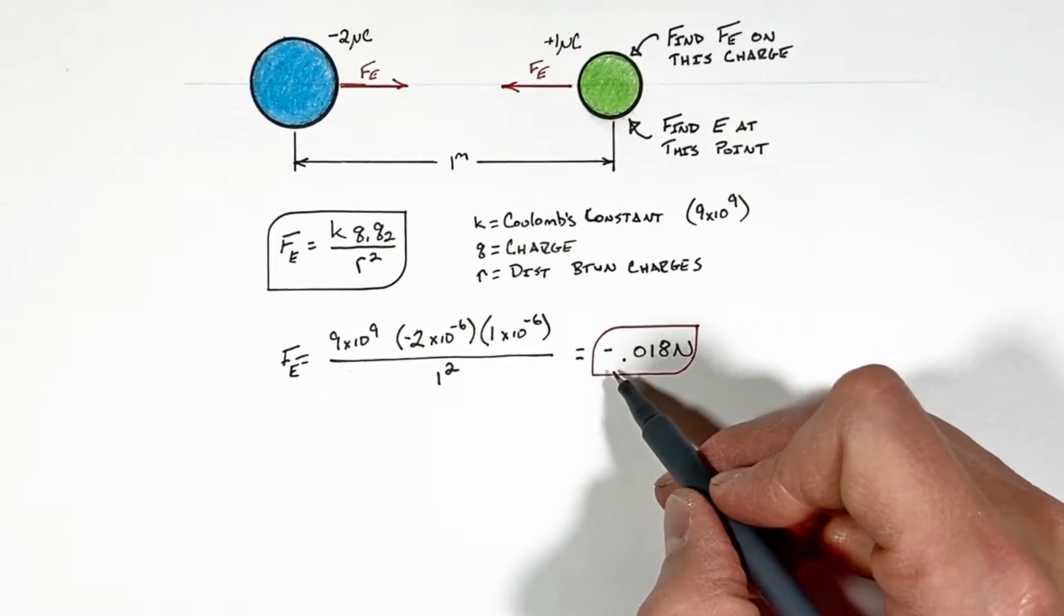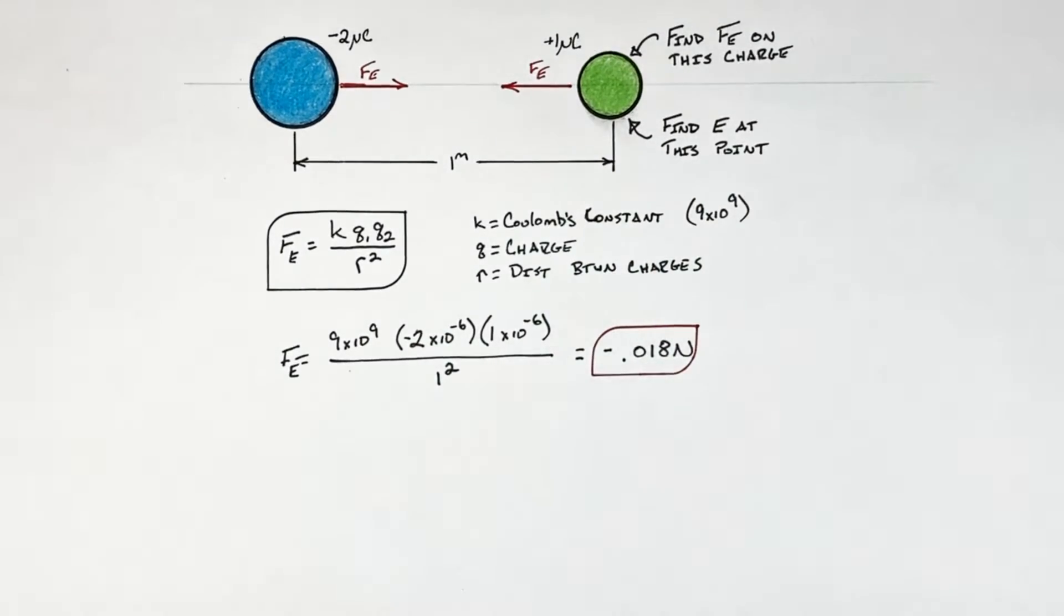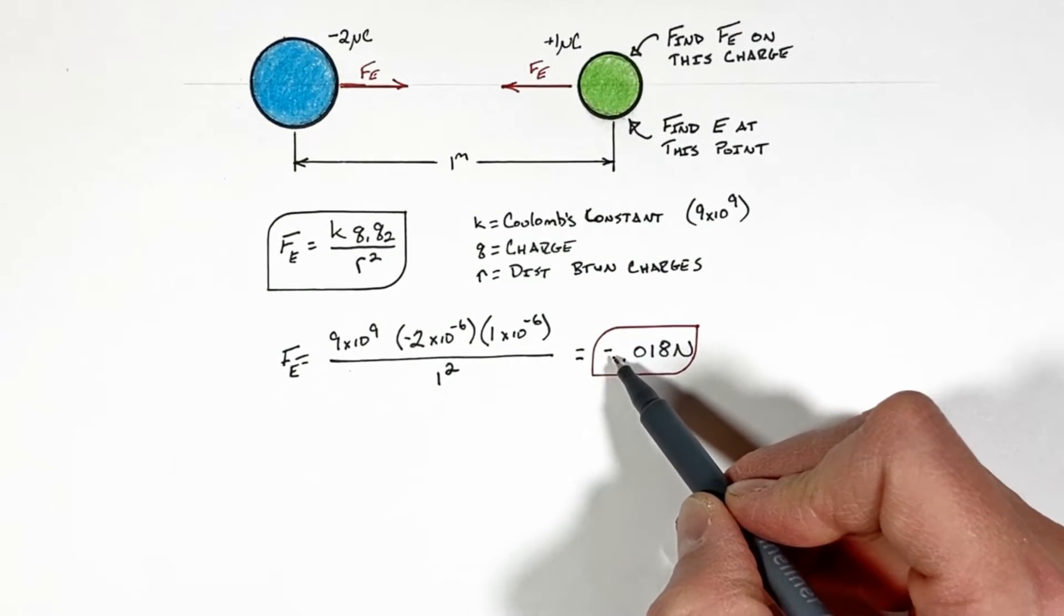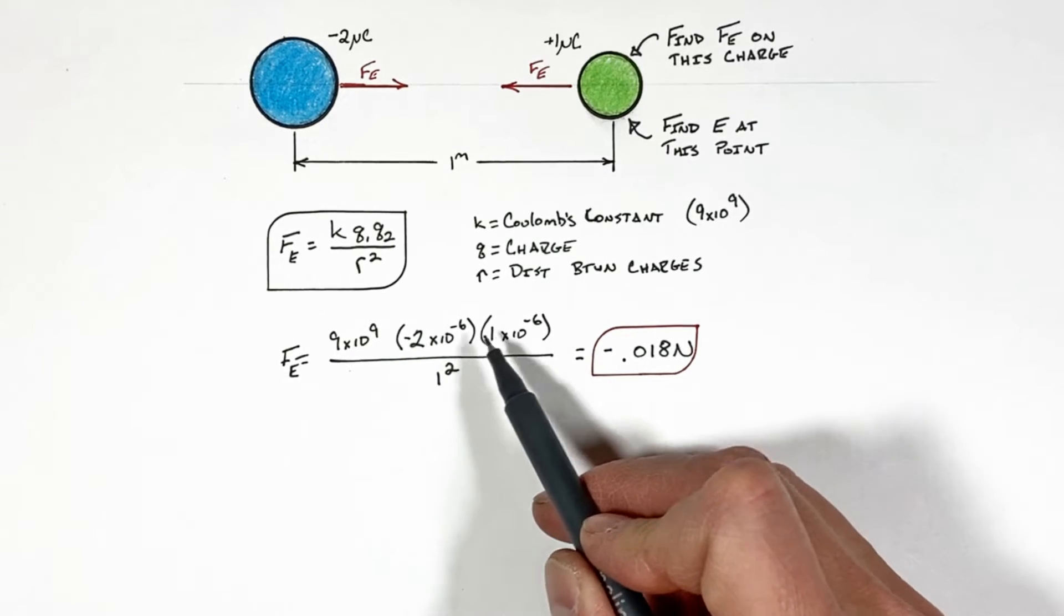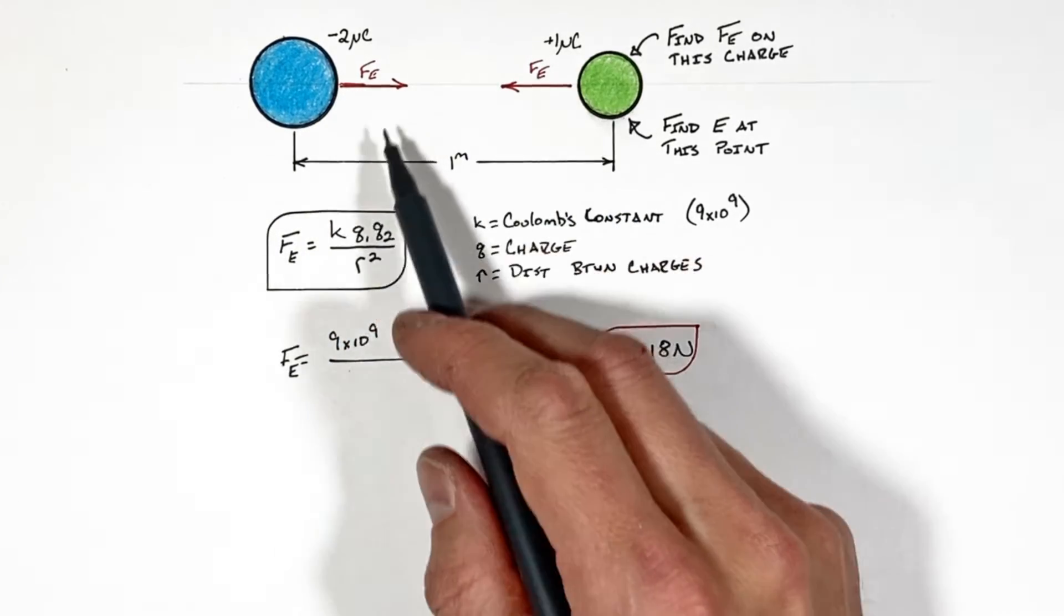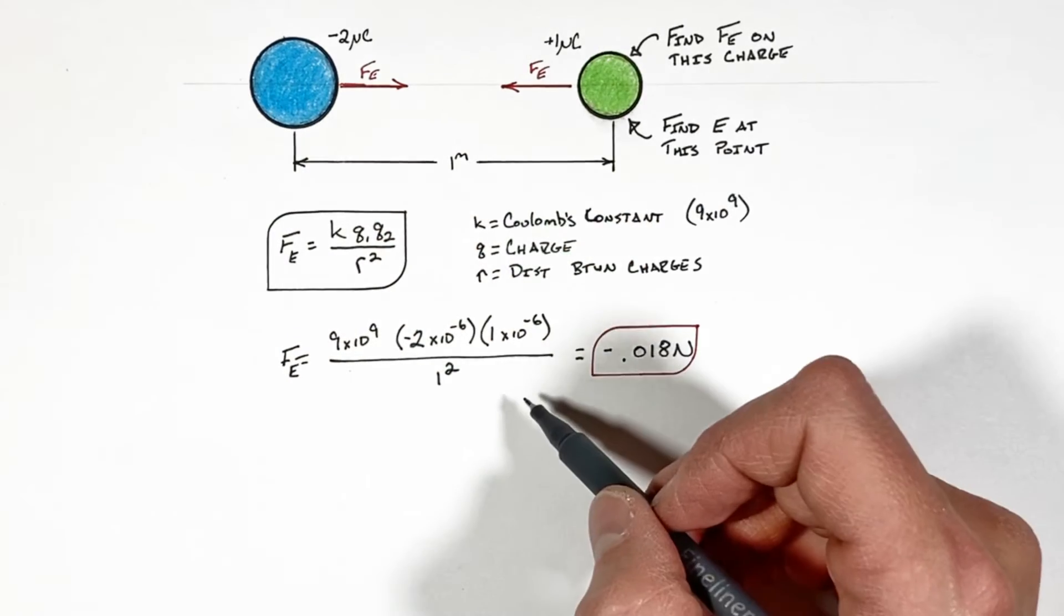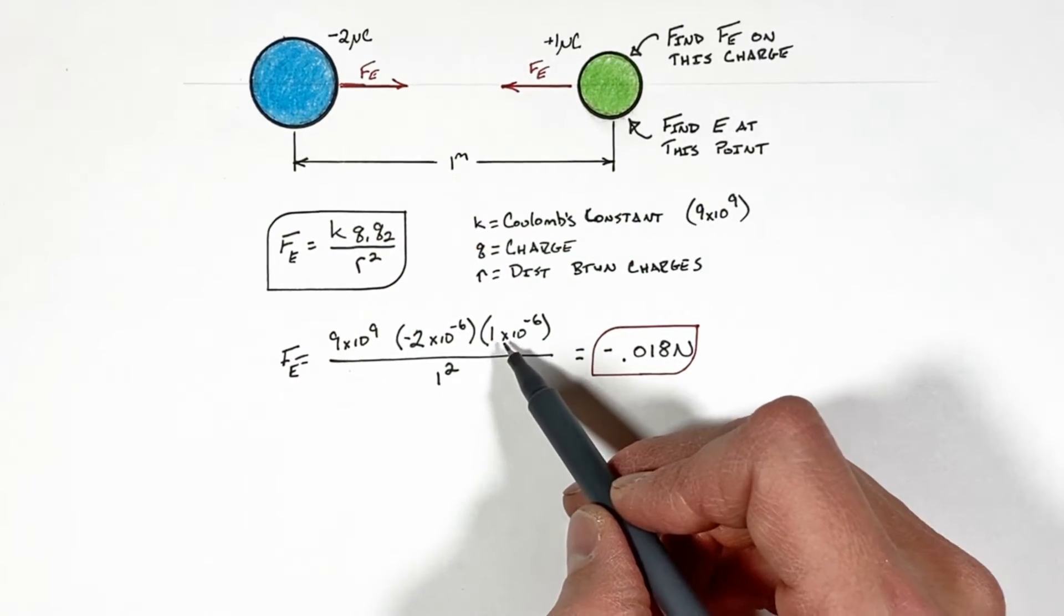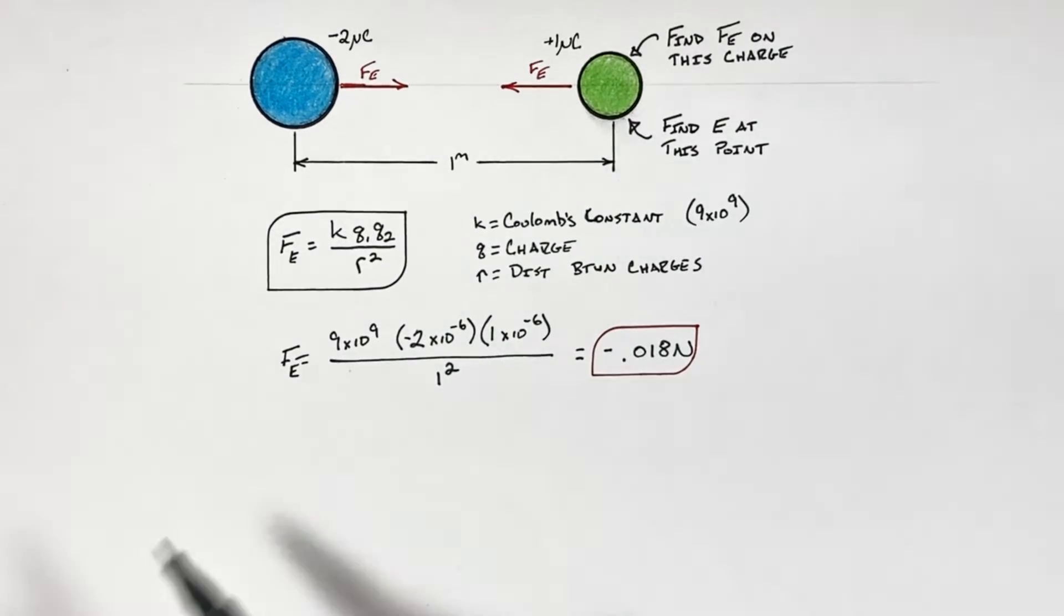If this result had come out positive, that would mean the two forces were actually pushing away or repelling each other. And if you look at where this negative came from, it exists because these two charges had opposite signs, ultimately going back to the idea that opposite charges attract each other and similar charges repel each other. If we had two charges with the same sign here, this electric force would have come out positive.